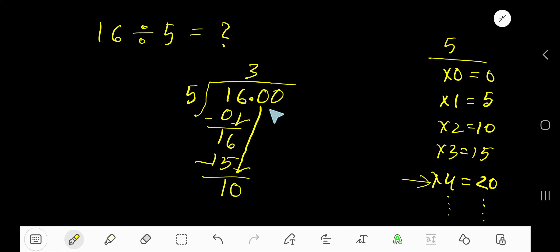Bring down the first zero. Before the zero there is a decimal. The decimal must come to the quotient directly. Now 5 goes into 10 how many times? 2 times. Write 2. 2 times 5 is 10. Our remainder is zero, so we are done. 3.2 is your answer.